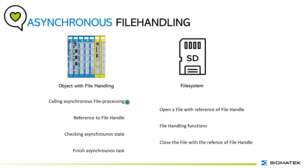To explain file handling you need to know that you need a file handle. The steps are as follows: from the file handling object you call the asynchronous file processing, which opens a file with the reference of a file handle. Next step is to reference the file handle and then do the file handling functions in the file. After this you have to check for the asynchronous task status. Once checked, you can close the file with the reference of the file handle, and then the asynchronous task is finished.